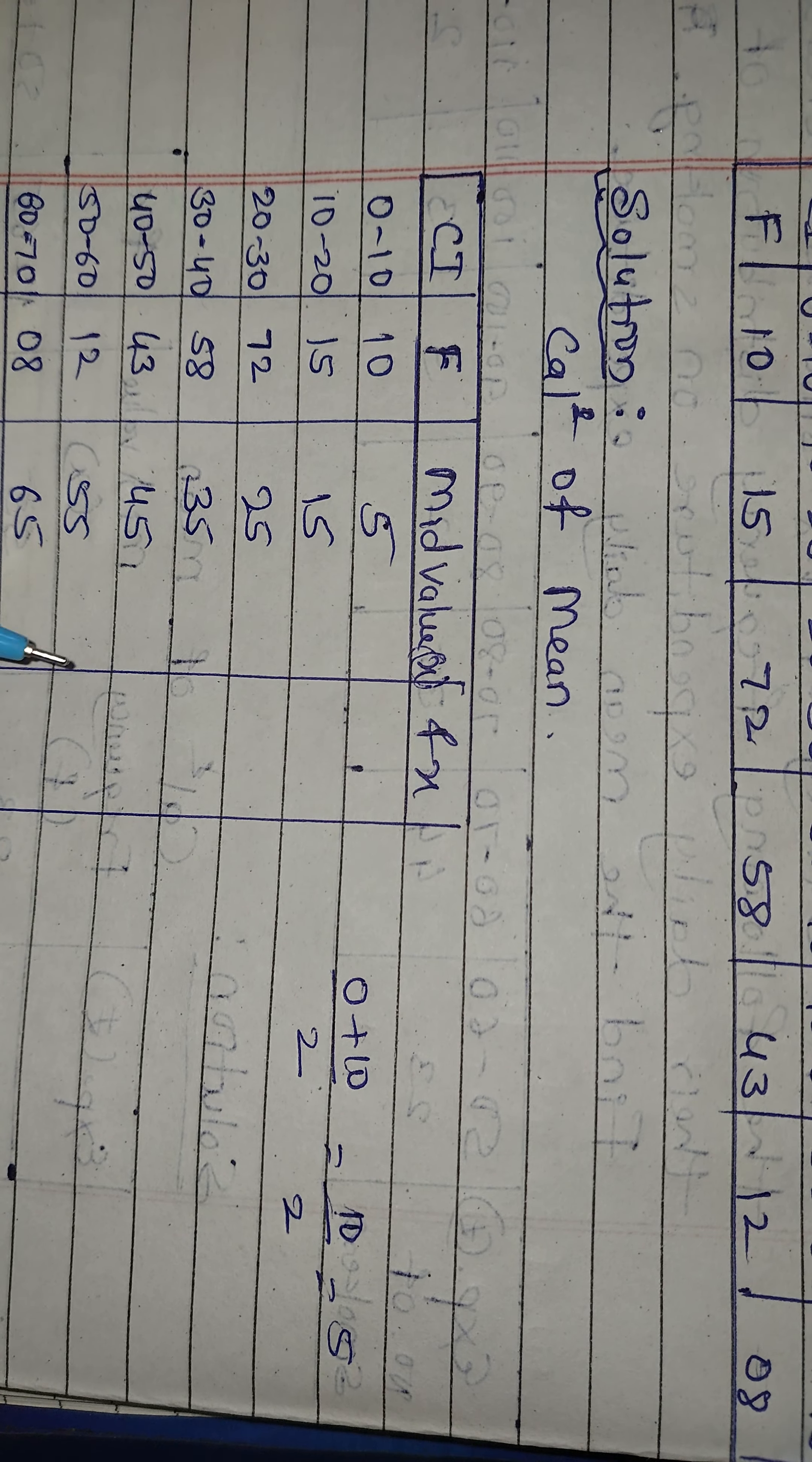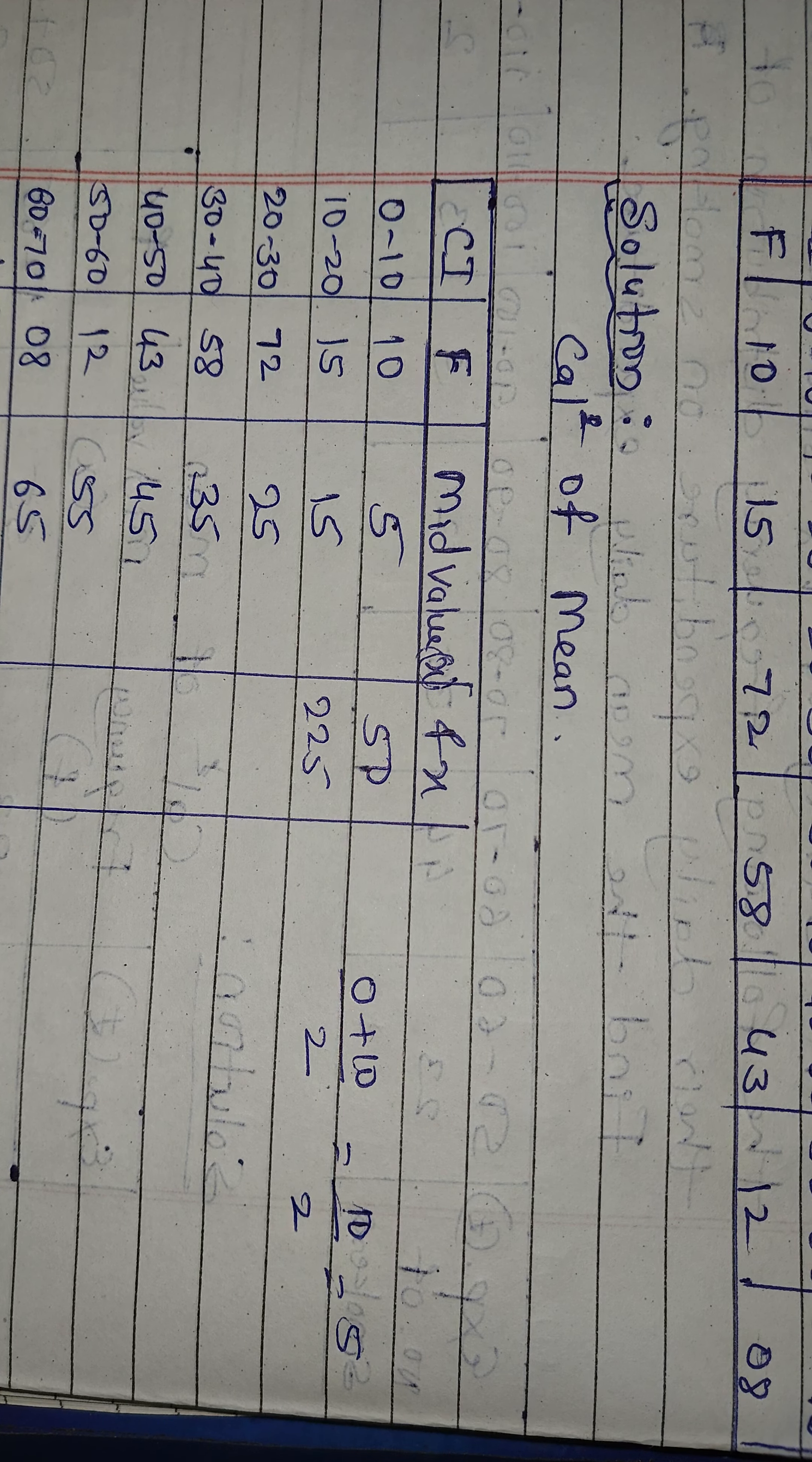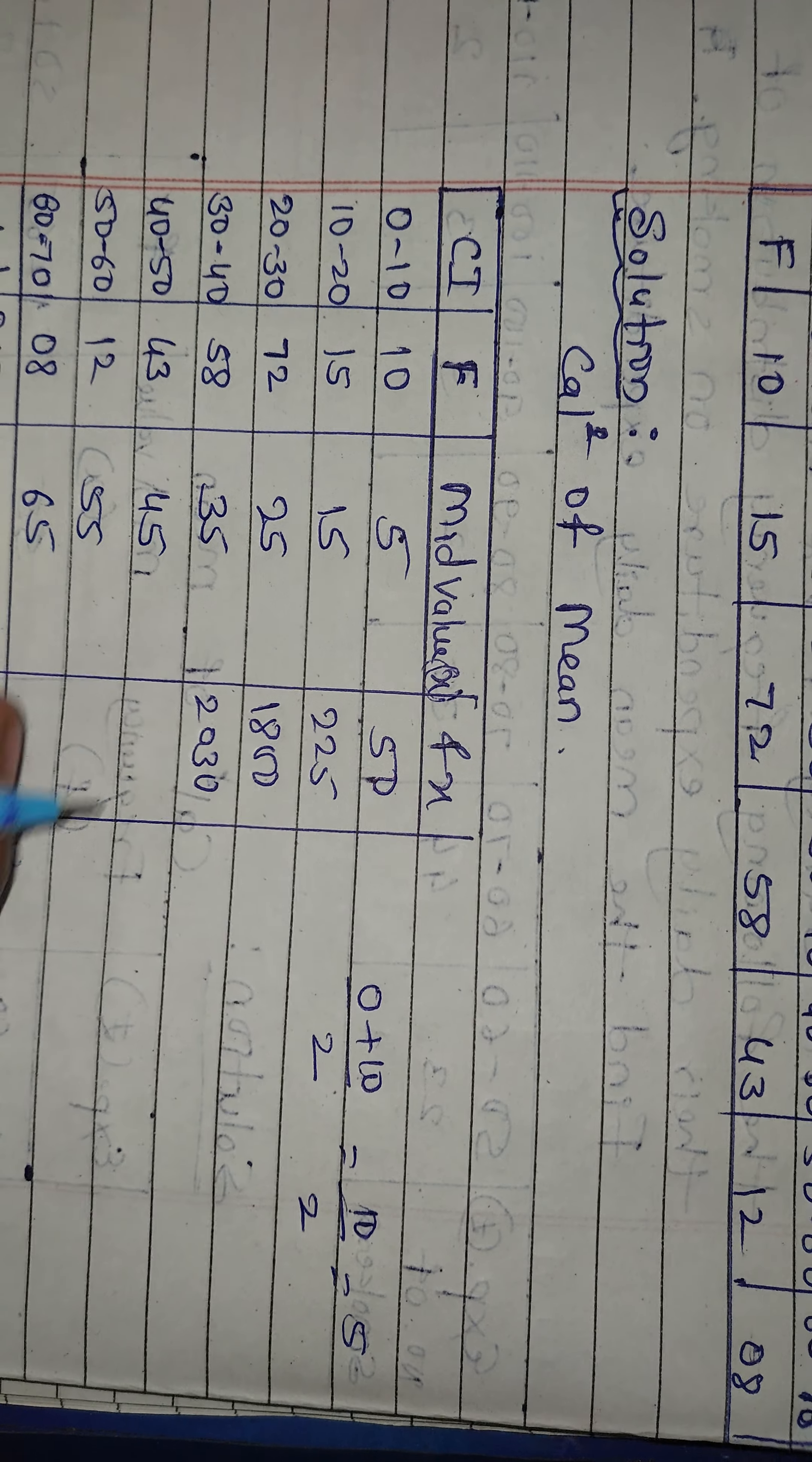We get FX value, so 10 into 5 gives us 50. 15 into 15, that is 225. Then 72 into 25, we get 1800. Then 58 into 35, that is 2030.